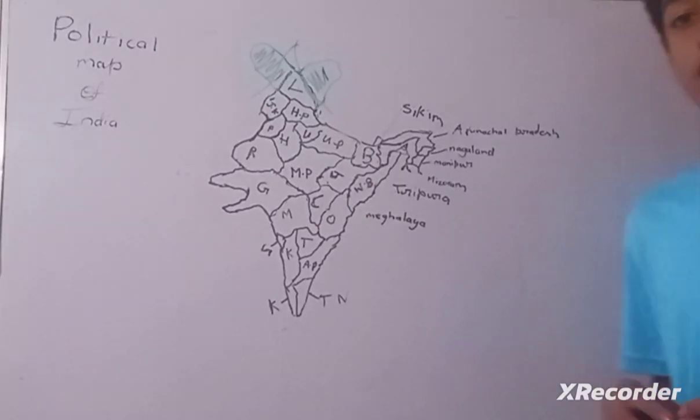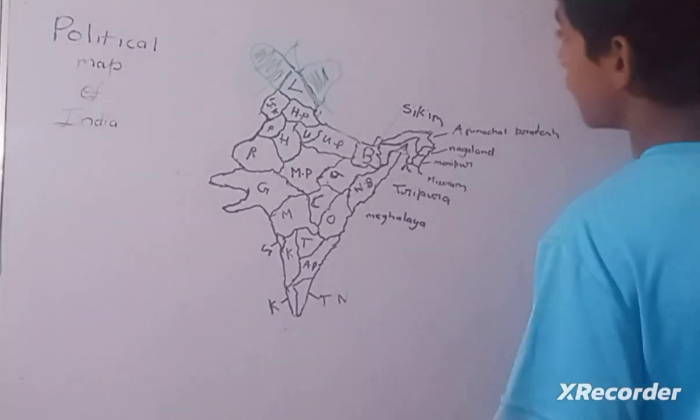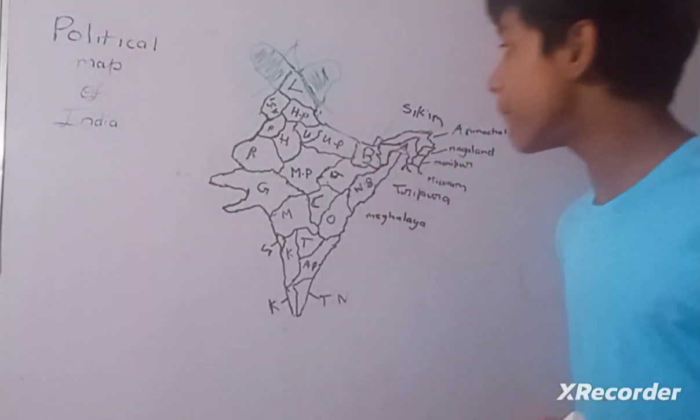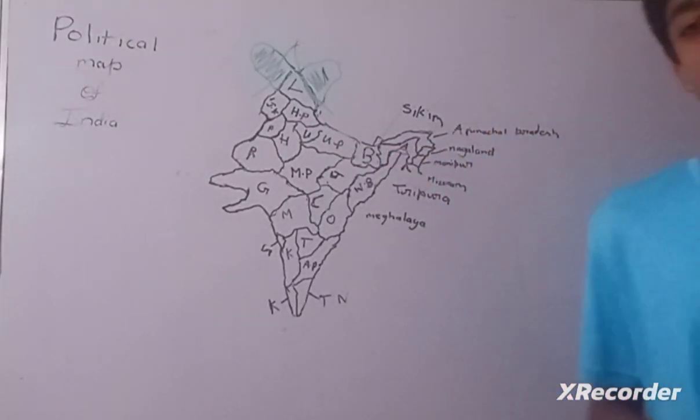And the part occupied by China is known as Aksai Chin. Now let's talk about Jammu and Kashmir. Jammu and Kashmir is famous for Jhelum River. Now it's also a union territory. Then Himachal Pradesh. Himachal Pradesh, most of the apple production is from Himachal Pradesh. It's famous for mountains, yaks, corn, forest, and its capital is Shimla.